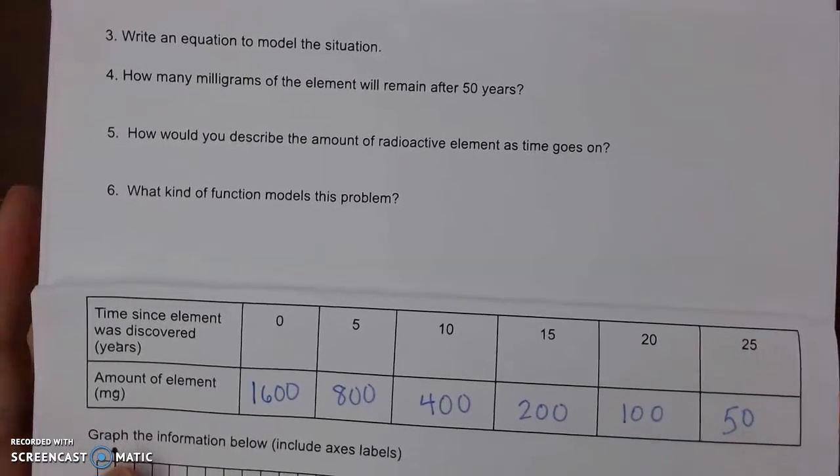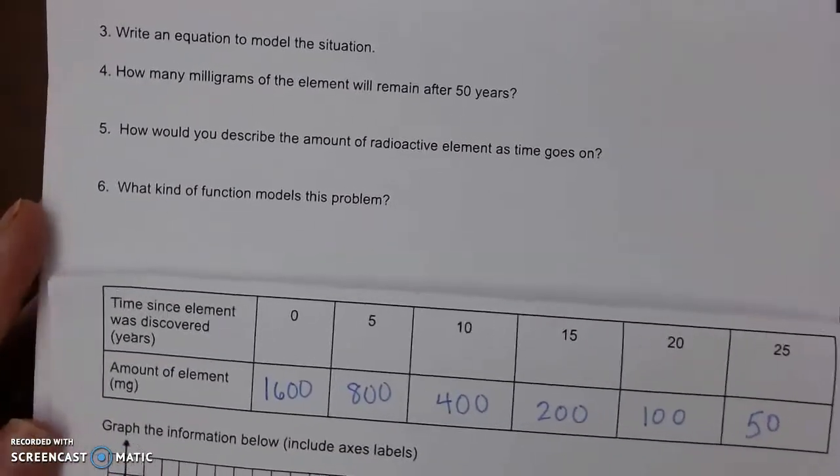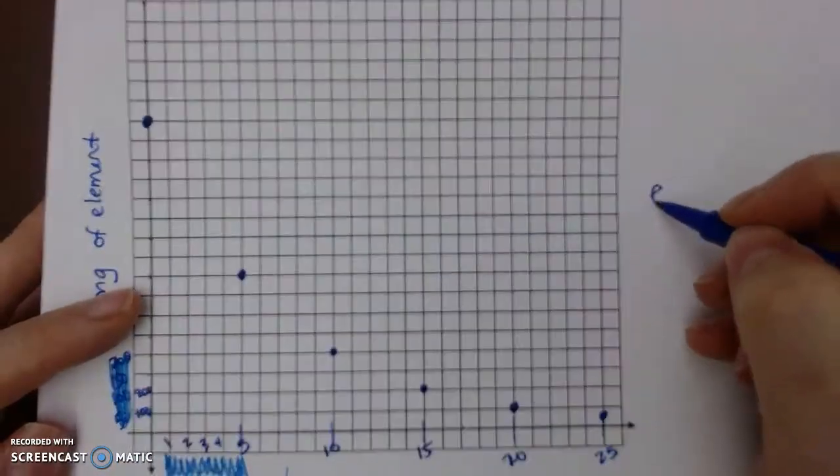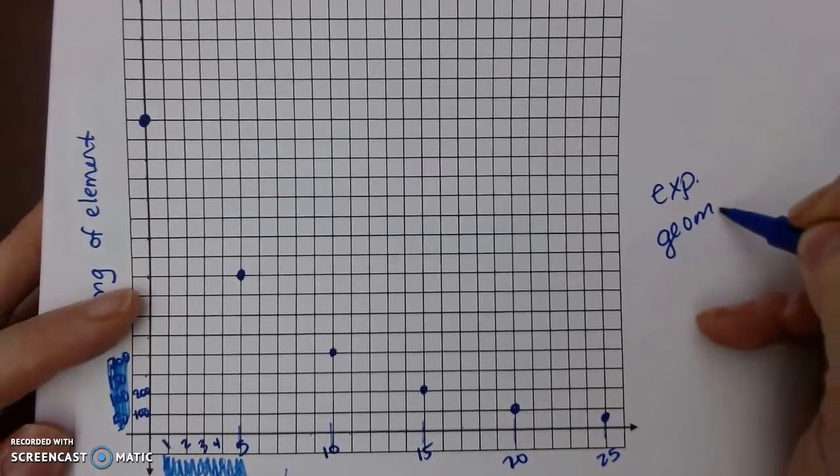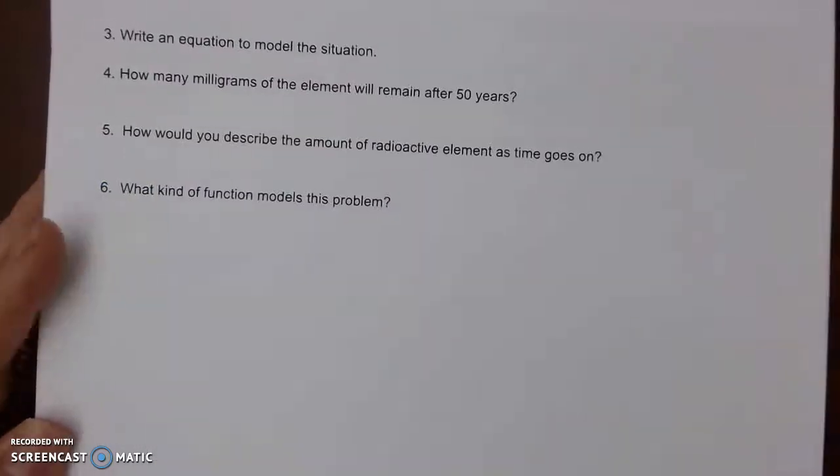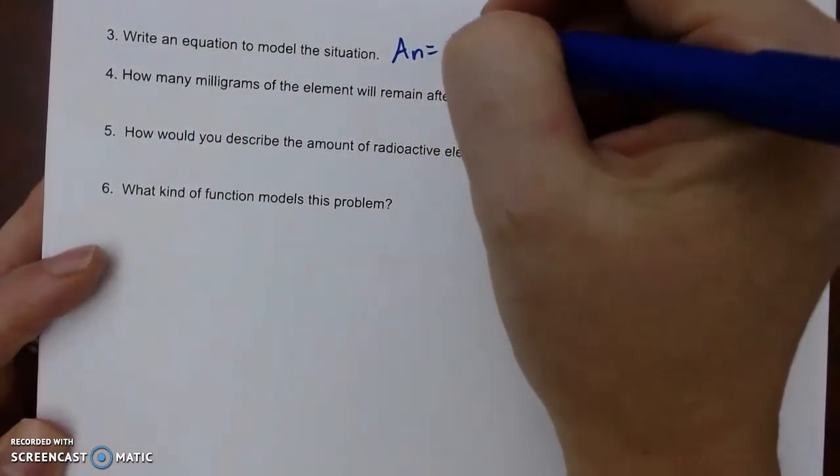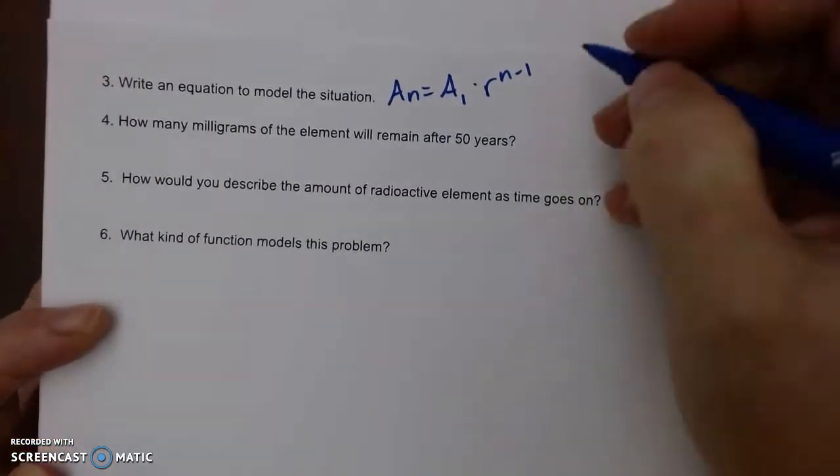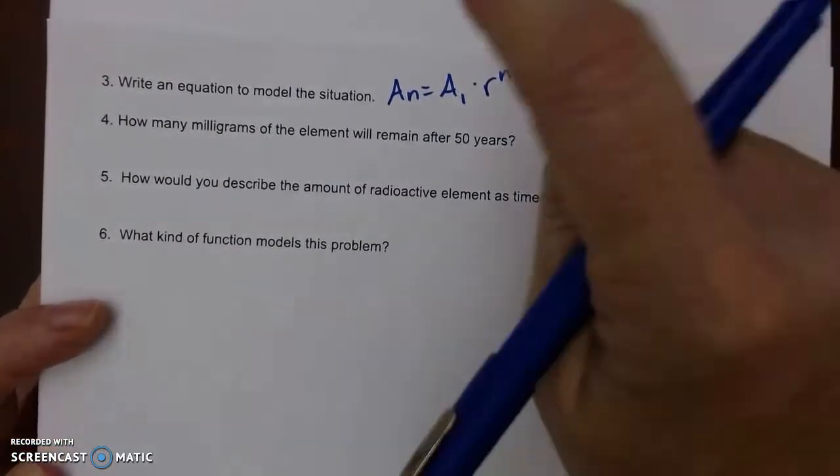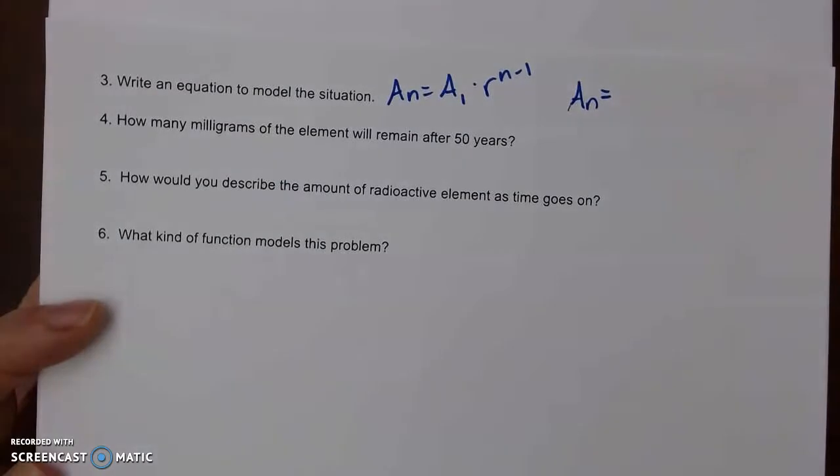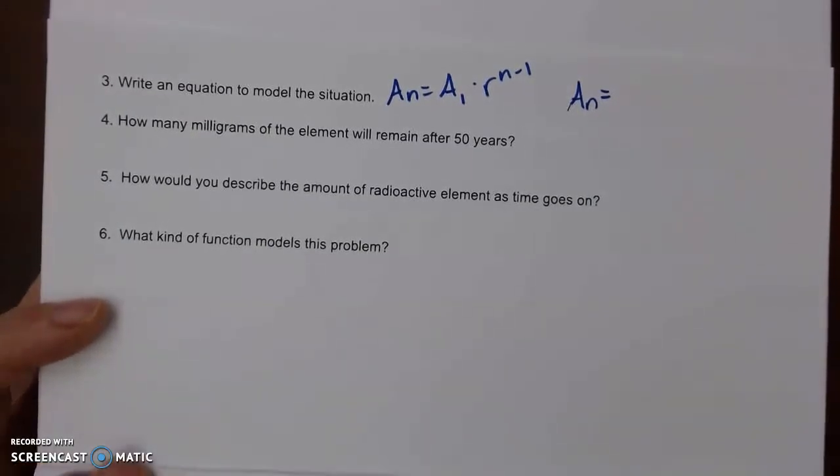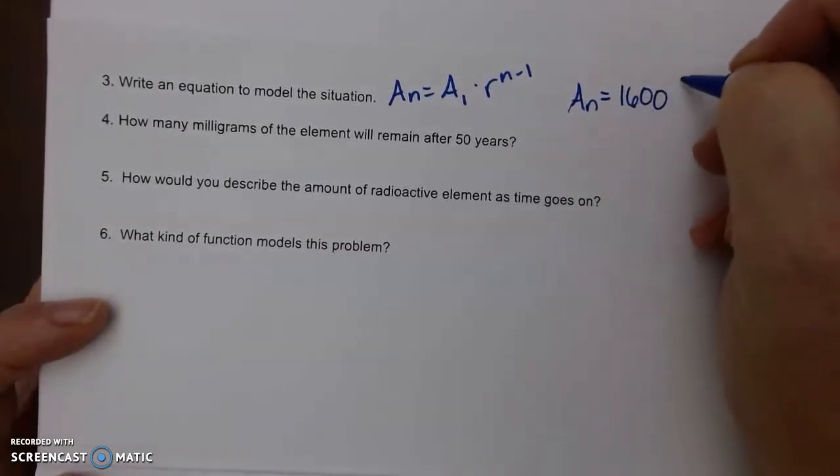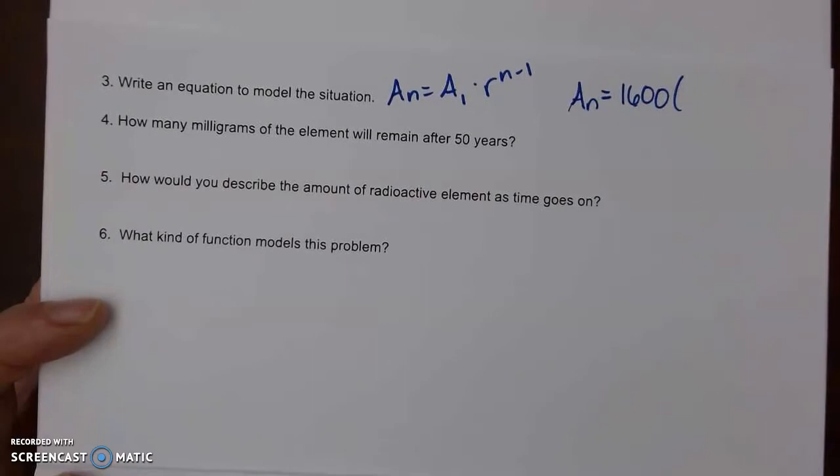It says write an equation, so we need to look. Two things: since this is a curve, we know that this is an exponential function or it's a geometric sequence. I've got A sub n equals A1 times r to the n minus 1, because that was geometric. So on our formula, we know our first term is 1600. Our ratio is what we're doing, half of it.